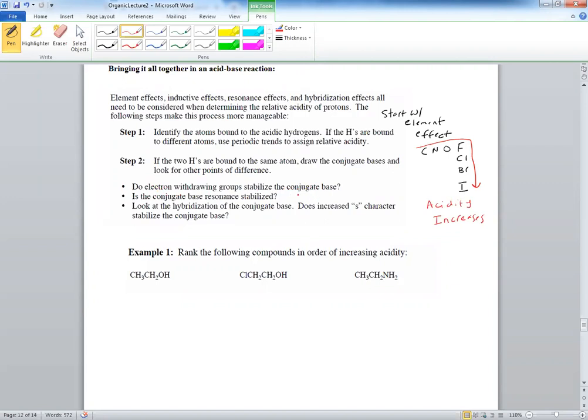So ask yourself also a few more questions. Do electron withdrawing groups stabilize the conjugate base? Meaning are there any, is there an inductive effect? Are there any halogen, any electronegative atoms nearby? Is there resonance? Is there hybridization? Are they different? Is the hybridization different?